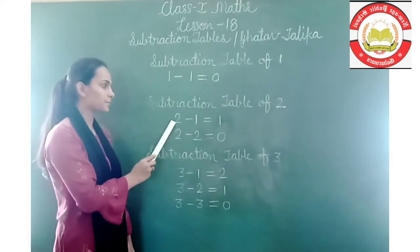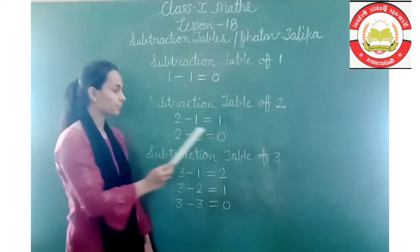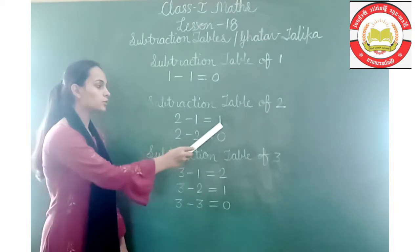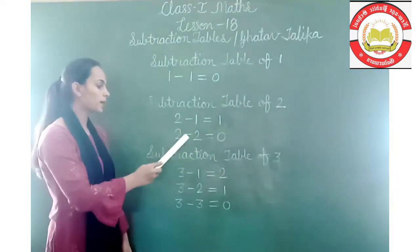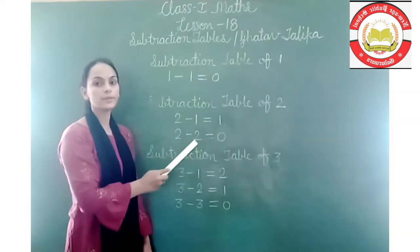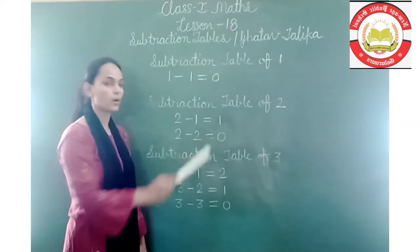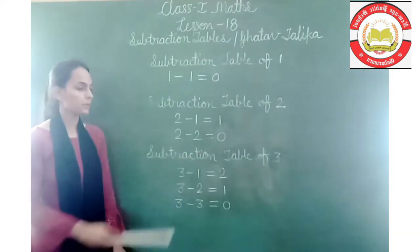We have started subtraction tables. 2 minus 1 is equal to 1. After 1, 2 minus 2 equals 0. So our subtraction table of 2 is complete.